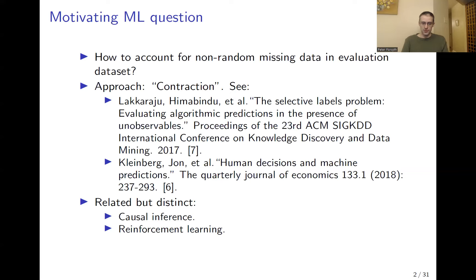Before we get into the paper itself, I think it's useful to begin with a motivating machine learning question. That question is: how can we account for an evaluation dataset from which data is missing in a non-random way — in some sort of systemic way? This question is very generic, and the details of the appropriate answer depend highly on the specific circumstances. The paper uses an approach called contraction, which is very useful in certain circumstances.